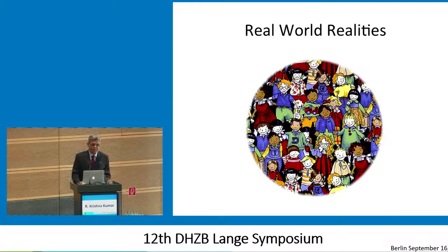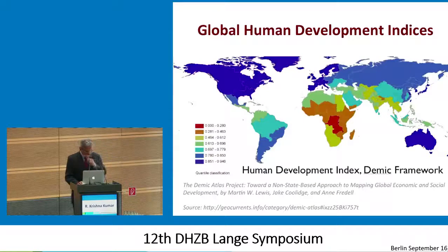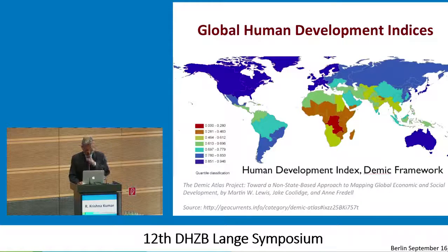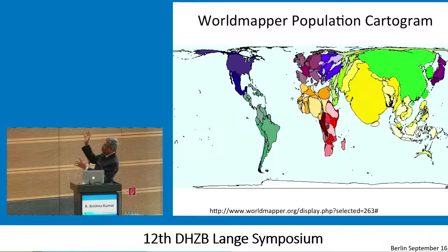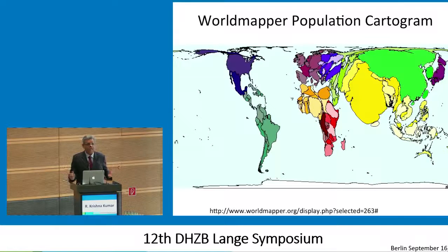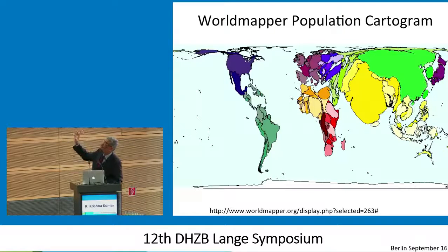Let's confront some real-world realities as far as congenital heart surgery in general is concerned, and look at the situation of the average child in the world. This is a very important graph showing the global human development indices. All those countries in dark blue are the blessed ones where every child will have access to a good AV canal surgeon. But everywhere else there's going to be some variability, and in Africa there's just no surgery at all. We are tackling about 7% of our national surgical requirement as far as infant heart surgery is concerned — so there is a tremendous deficiency globally.